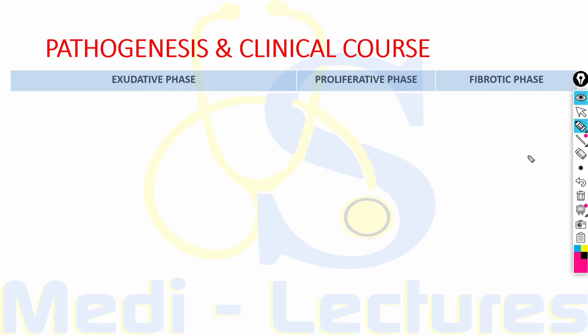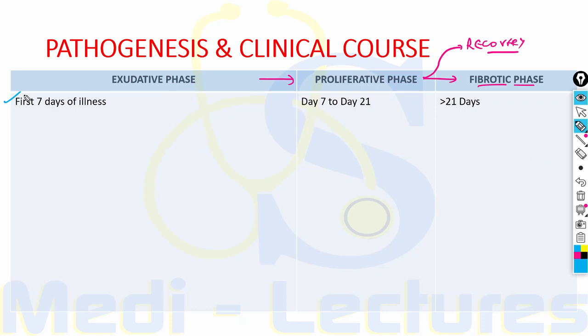The pathogenesis and clinical course of ARDS is divided into three phases: the exudative phase, followed by the proliferative phase, followed by the fibrotic phase. Most patients after the proliferative phase undergo recovery, but some progress to the fibrotic phase with lung fibrosis. The exudative phase spans the first 7 days, proliferative from 7 to 21 days, and after 21 days there is either recovery or fibrosis.